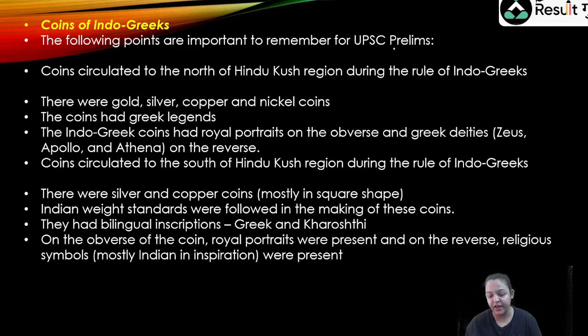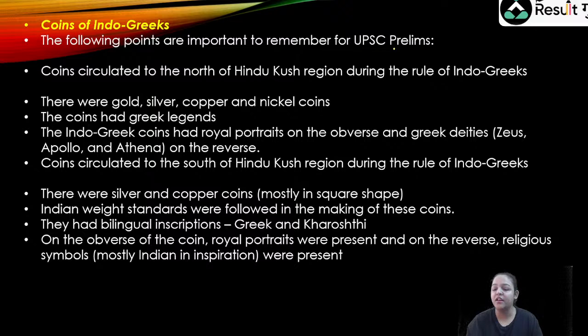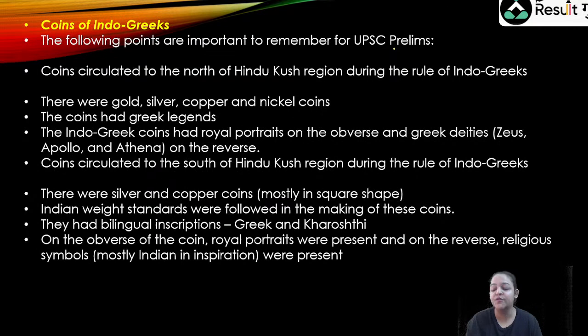Indian weight standards were followed because of trade relations with India — since no exchange rate was established at that time, coins needed to be the same weight as those of trading partners, so the metal content would be equivalent. The inscriptions on the coins were bilingual — either Greek or Kharosthi. On the obverse were royal portraits, and on the reverse were religious symbols; mostly Indian inscriptions were used to placate the largely non-Greek Indian population.